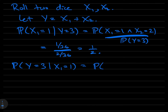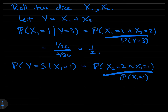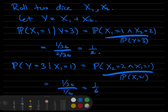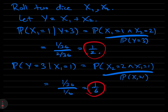Let's flip that around. What's the probability that Y equals three given that X1 equals one? Notice the numerator is the same, but now the denominator is different. The numerator is still one out of 36, but the denominator is now one-sixth. So the ratio is one-sixth. Notice that the probability of A given B and the probability of B given A are not guaranteed to be the same number.